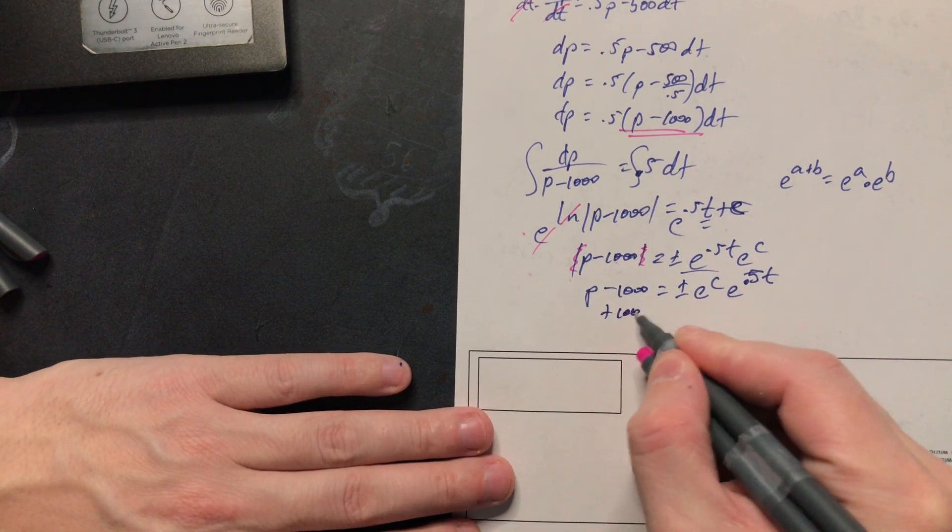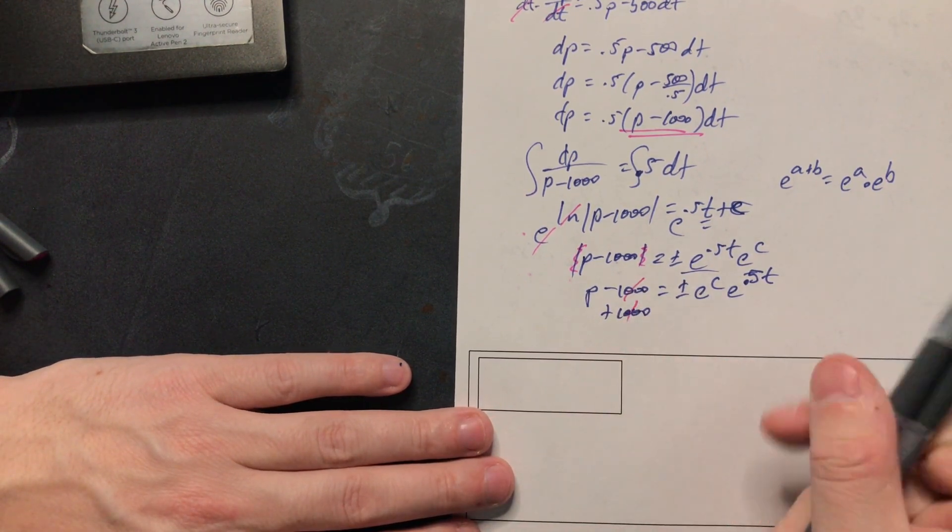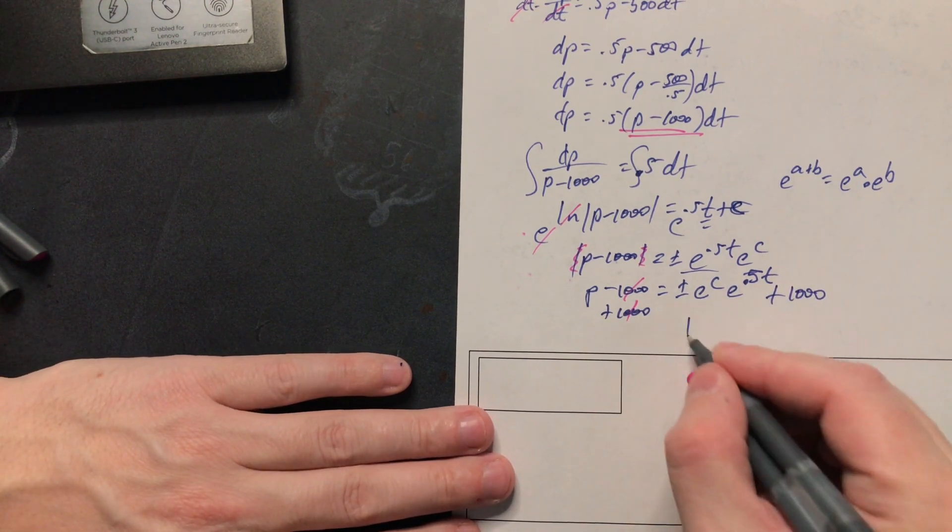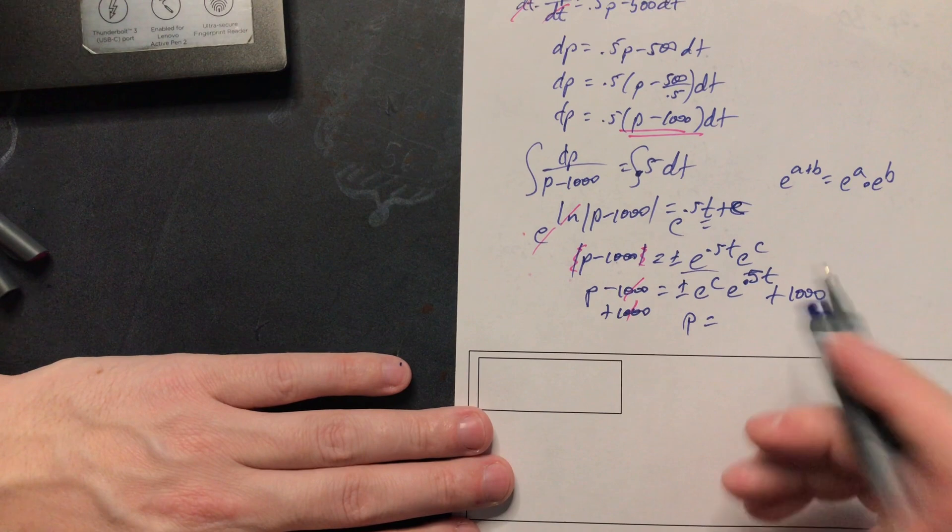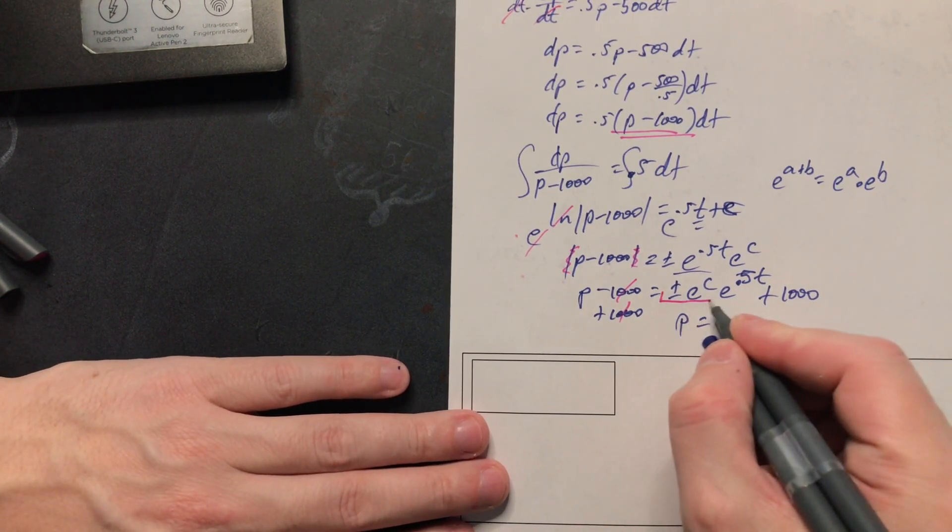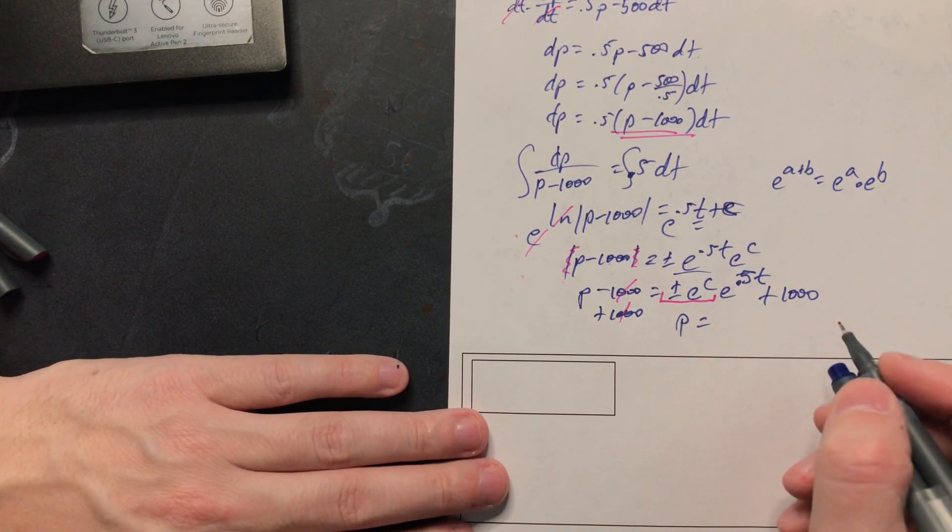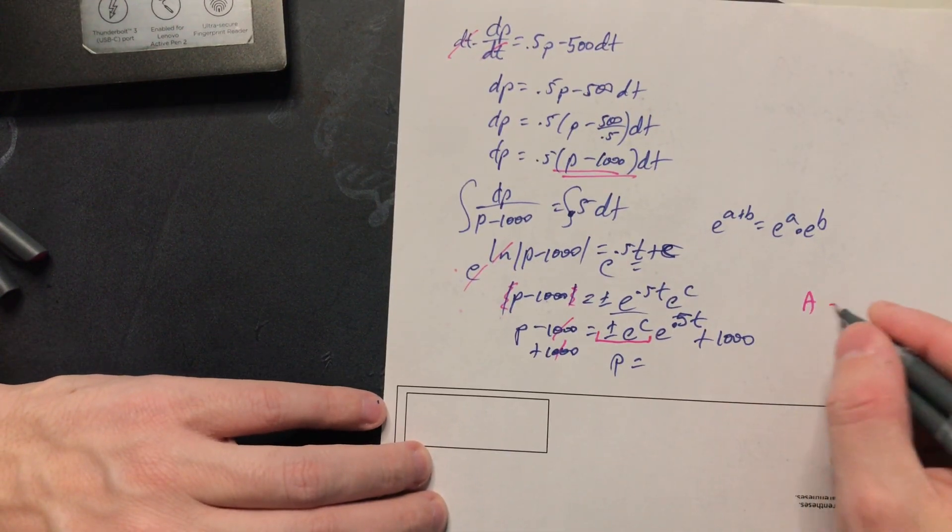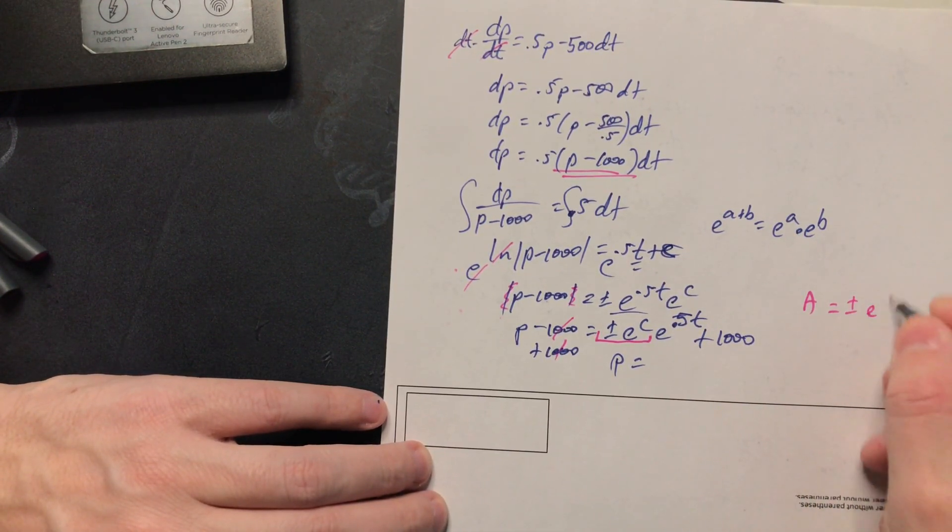Lastly just add a thousand so of course this will cancel and then you're going to have plus a thousand on this side. So p is equal to now again there's a lot of constants but here that's a new constant. So you can call it some other letter. Call it a for example. Instead a equal to this plus or minus e to the c.